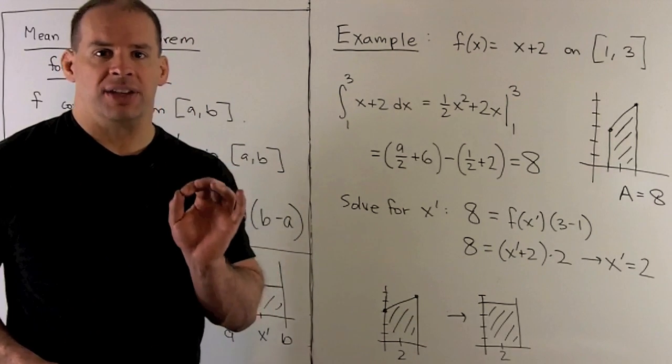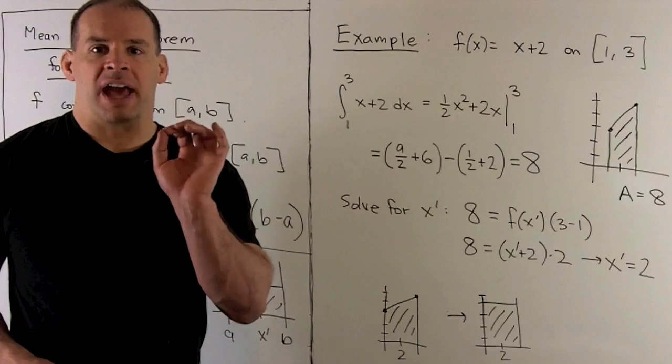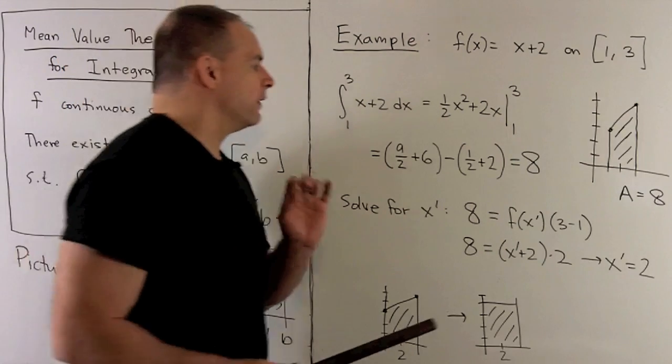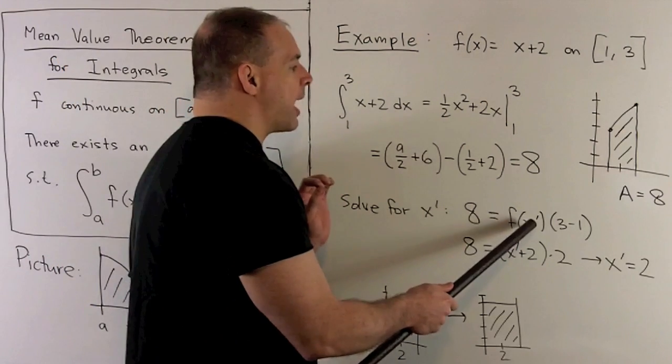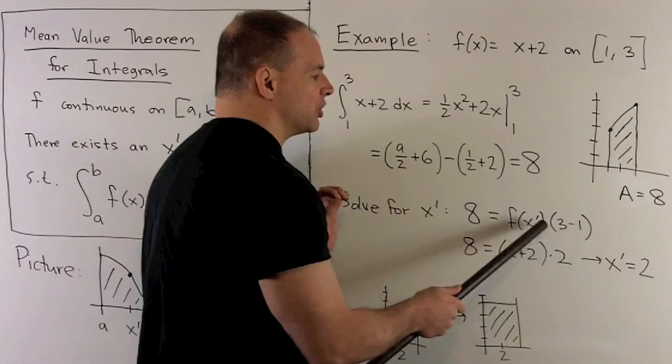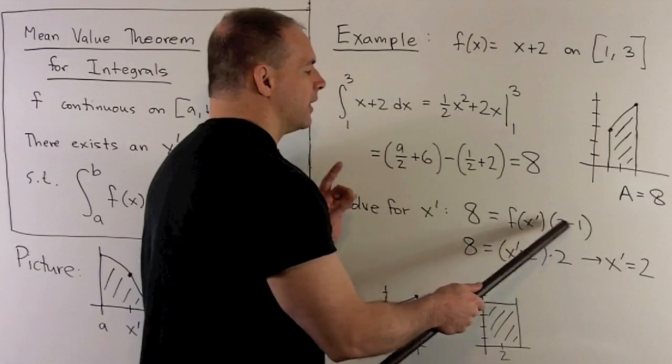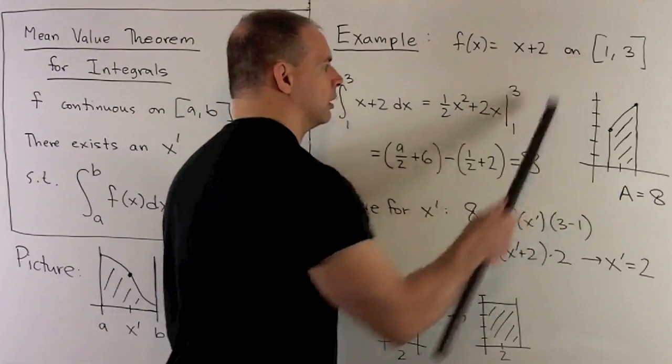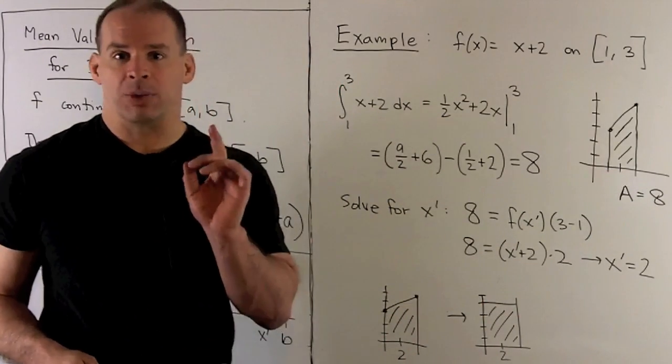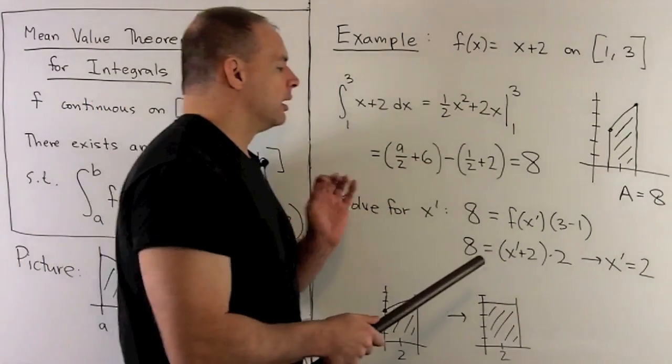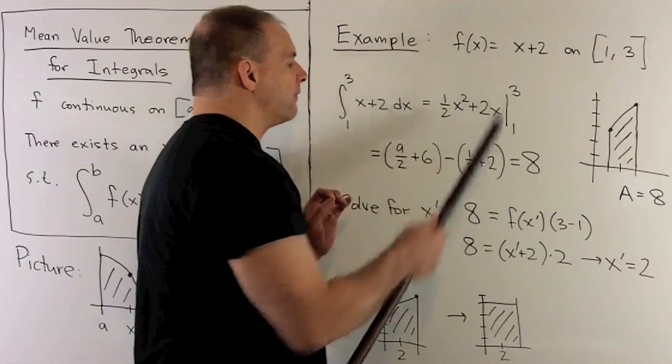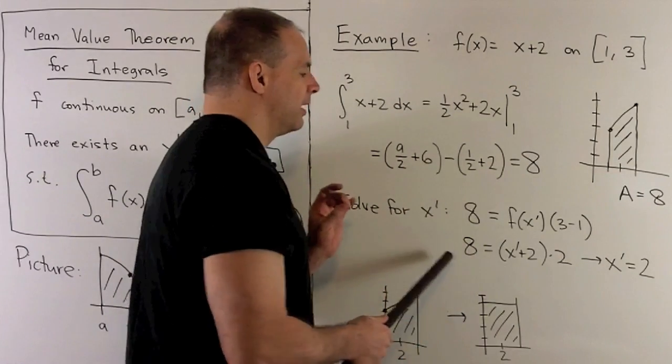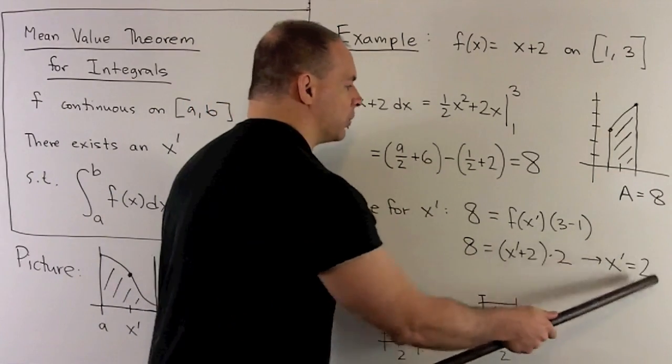Now, the Mean Value Theorem says, okay, there's going to be this x', so that if I take f on x', multiply by the length of the base, which is 2, that's going to be equal to our area over here. So, we want to find that x'. Now, if we put x' into f, that's just x' + 2. We work it out, we get x' is equal to 2.